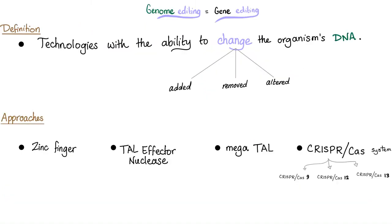And now the definition actually makes sense: the ability to change the organism's DNA. We will remove the bad part and put a new part in it. These are the methods, and we will focus on the CRISPR-Cas system — we have Cas9, Cas12, and Cas13. We'll focus more on CRISPR-Cas9.